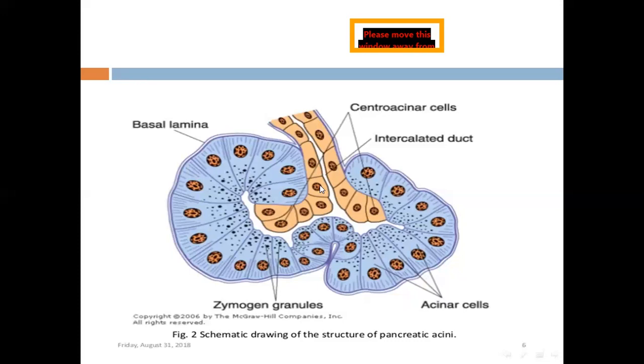The same applies to the central acinar cells. Central acinar cells and intercalated ducts both have receptors also on their basal plasma membrane. They have receptors for the hormone secretin that's released from the diffuse neuroendocrine cells of the small intestine, and for acetylcholine.